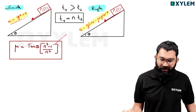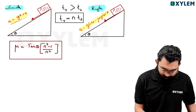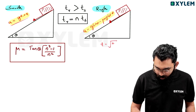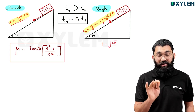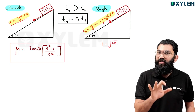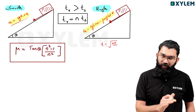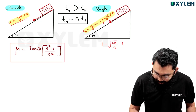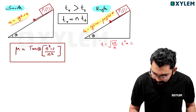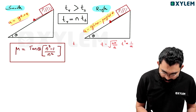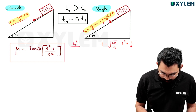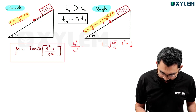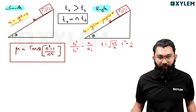We know that for the same height, the time is given by the root of 2h/g concept — one-dimensional motion. For both inclined surfaces, same height but different accelerations. Using kinematics, t² is inversely proportional to acceleration. So t_rough² divided by t_smooth² equals acceleration on smooth surface divided by acceleration on rough surface.